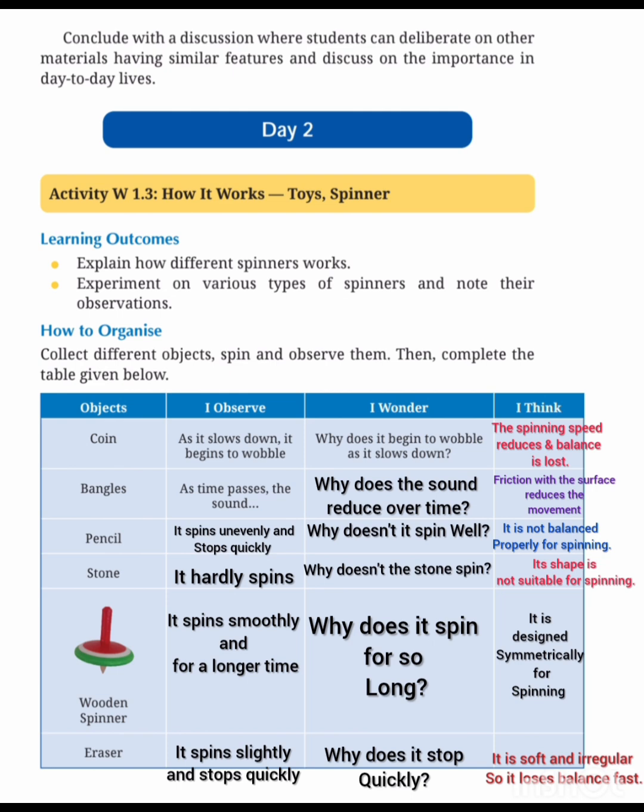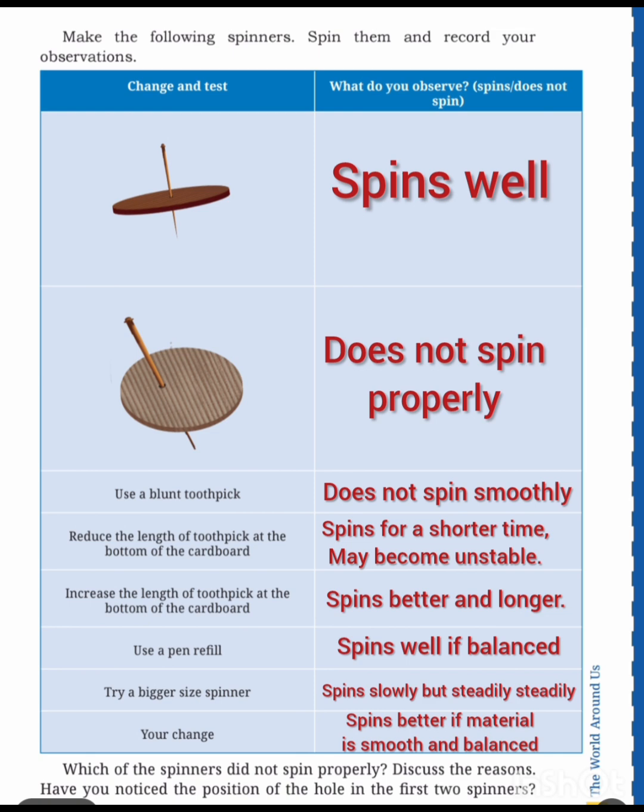Objects like coin, pangals, scone, wooden spinner — you can use these types of observations. How water and what you think about objects. Observe your number 1.4 and 1.5. Make the following numbers, bring them and record your observation.